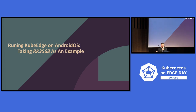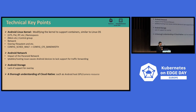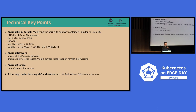Next, I will introduce how we run the KubeEdge node on Android OS. We take a specific device as an example. This covers some technical key points we need to know when running applications on Android OS. You know the Android OS also has a Linux kernel, but we have to modify the kernel to support containers, similar to Linux OS. This is the main challenge when we run containers on Android OS.